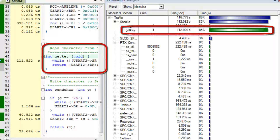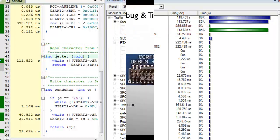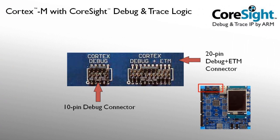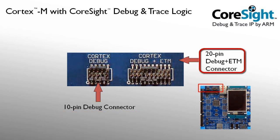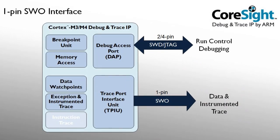Let us explore the various physical connection interfaces to the trace unit. Evaluation kits frequently offer two standardized debug connectors in a small 0.05-inch pitch. The 10-pin debug connector allows run control and serial wire trace output with the SWO pin. The 20-pin debug ETM connector is a superset of the 10-pin connector and offers full instruction trace output. Almost every Cortex-M3/M4 microcontroller device offers the serial wire or SWO trace output, delivering data watchpoints, exception and instrumented trace.